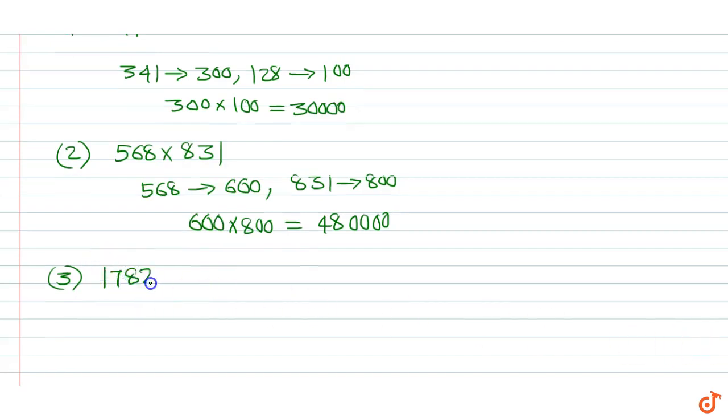1782 x 332. 1782 can be rounded off to 2000. 332 can be rounded up to 300. So the product is 2000 x 300 which is equal to 600,000.